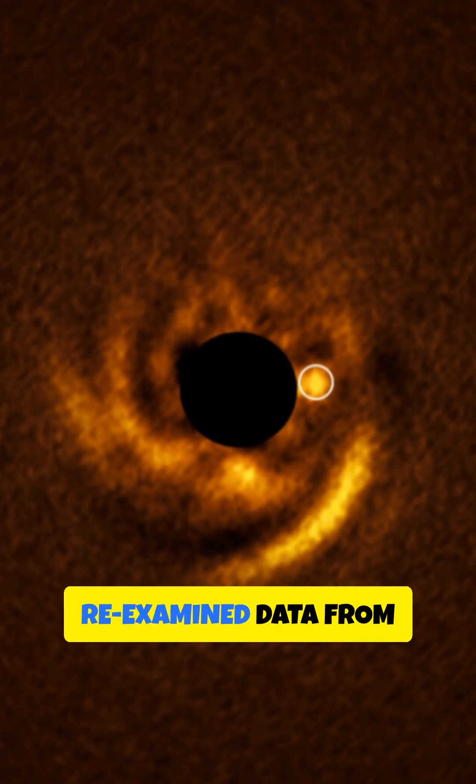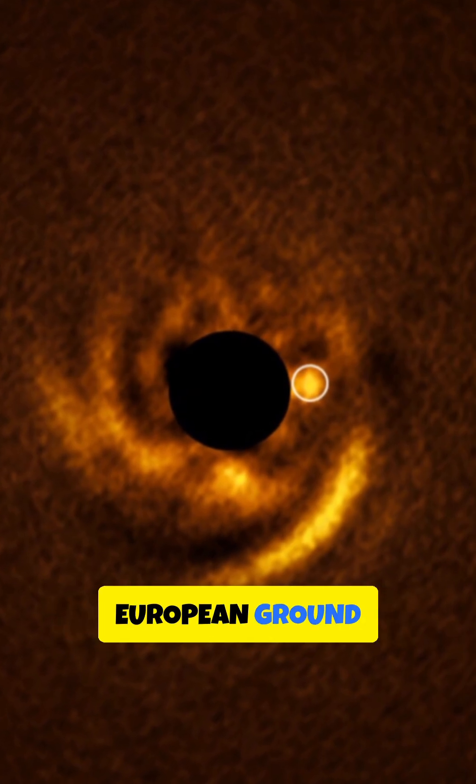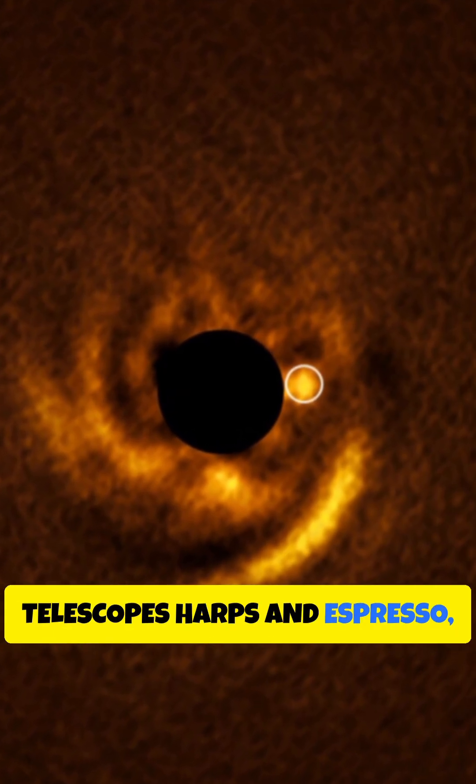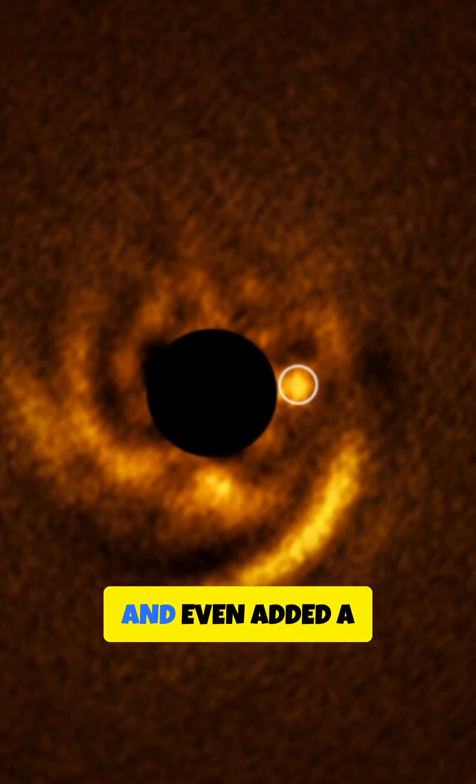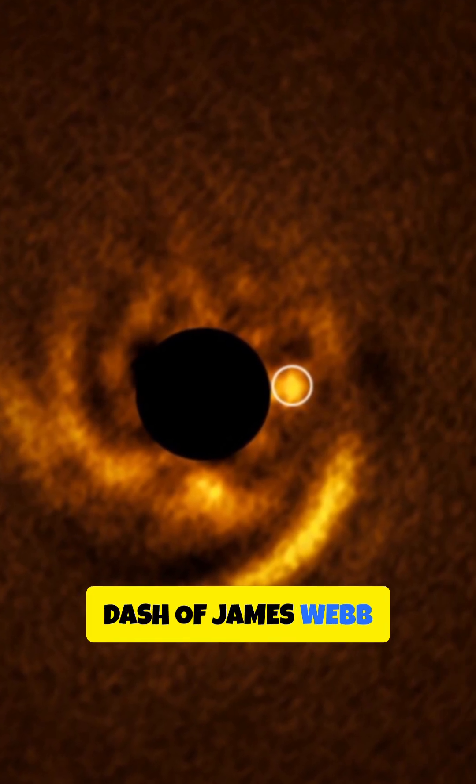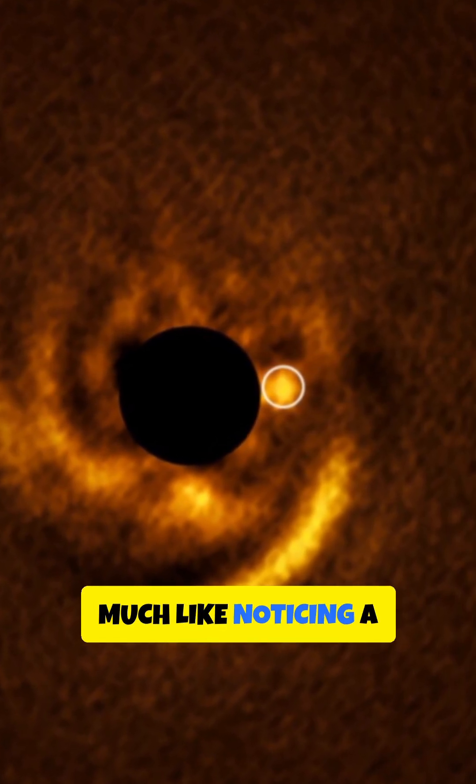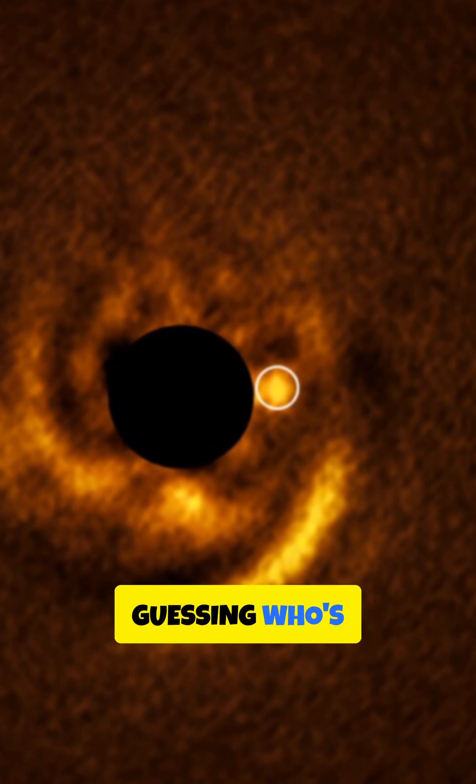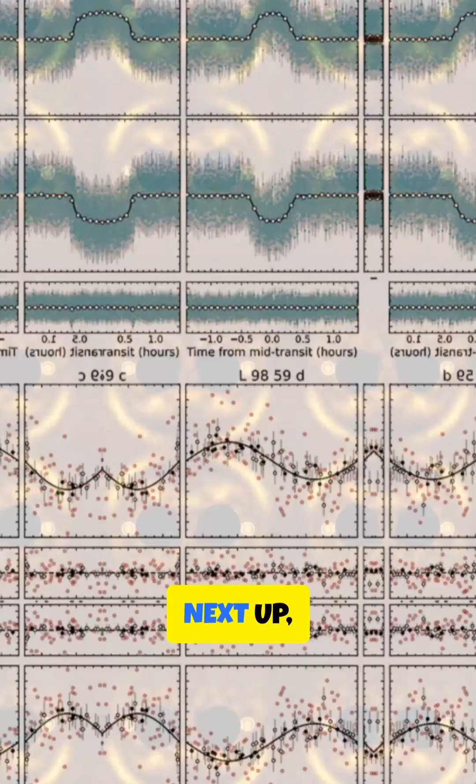How'd we spot it? Astronomers re-examined data from European ground telescopes HARPS and ESPRESSO, combined it with NASA's TESS, and even added a dash of James Webb magic to detect its gravitational tug, much like noticing a dance floor shake and guessing who's breakdancing off-camera.